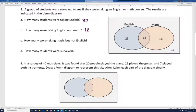How many were taking math but not English? That would be these guys, because they're not taking English. And so, that's 18. How many were surveyed? If you add up all these numbers, this is 30 and 25, 55, 65, 66. All right. Number four.